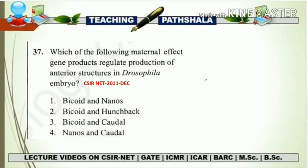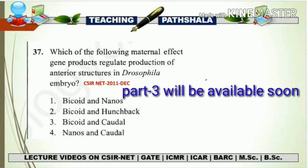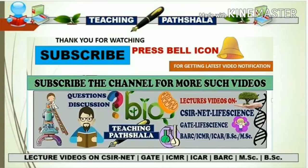There are still 10 slides remaining in this video, but it is already more than 25 minutes. I think it would be better to make a part 2. I'm ending this video here. The second part will continue the anterior and posterior axis formation, covering more genes and mutation case studies — what happens if bicoid is not present, what happens if nanos is not present. So there will be a need for a second part of this video.